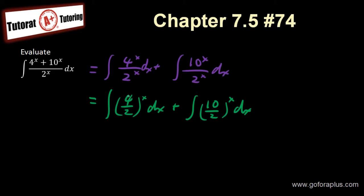Now you can simplify the base. So the base value here is going to be integral of 2 to the power of x dx plus integral of 5 to the power of x dx.